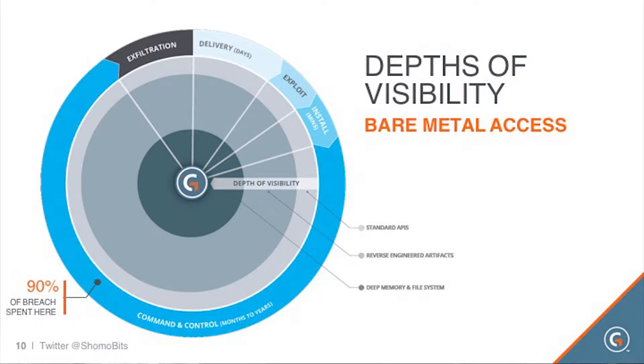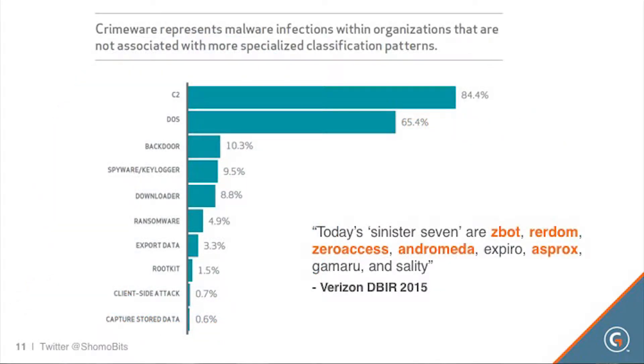We'll drop some of those dots in the center as we go through what the bad guys are doing and where they leave evidence in memory. The piece of malware I'm going to show you is a trojan — specifically a remote access trojan called Ghost RAT. I chose this over ransomware because ransomware tends to be more cybercrime-oriented, while RATs are more likely to be used by state actors against government targets. And on last year's Verizon DBIR report, trojans were the biggest part of the 'Sinister Seven' most common pieces of malware.